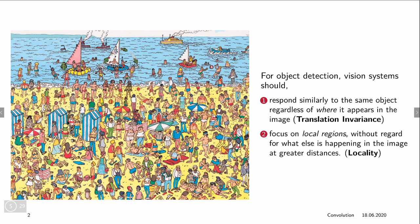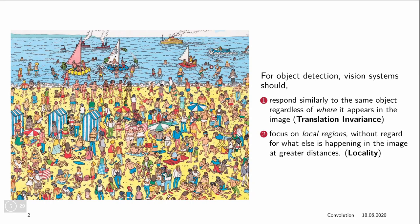And B, we want to focus on local regions. If we look at a certain local region, we don't want to care about what's happening somewhere else. So we want translation invariance and locality for our models. By the way, this here is Waldo.